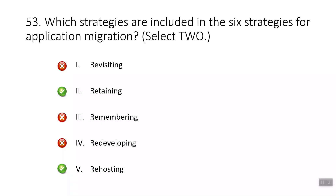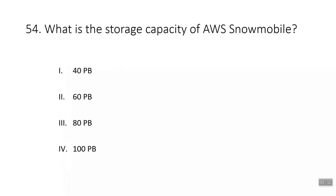Question fifty-four: what is the storage capacity of AWS Snowmobile? The correct answer is 100 PB. Each Snowmobile comes with up to 100 PB of storage capacity and is used for transferring up to 100 PB of data to AWS.